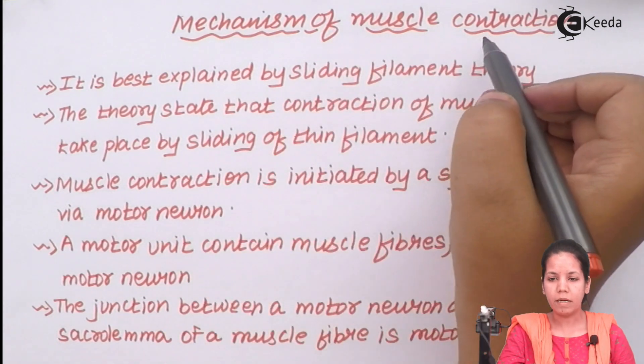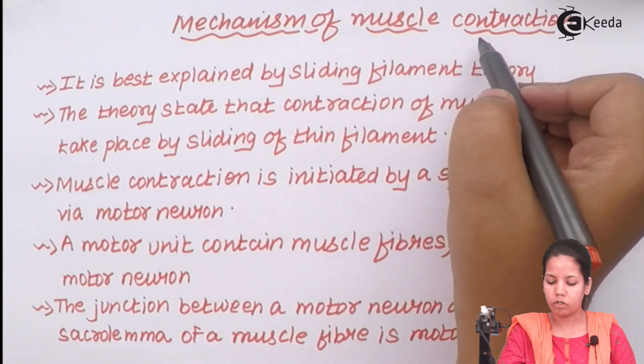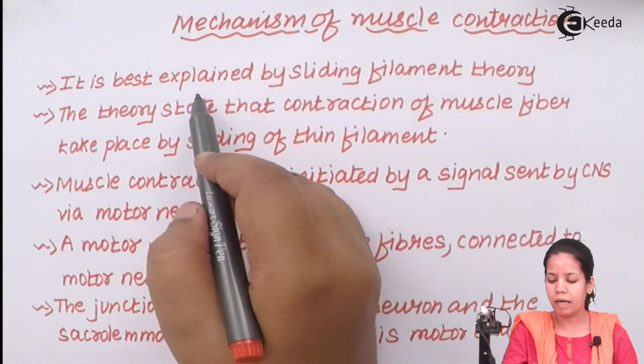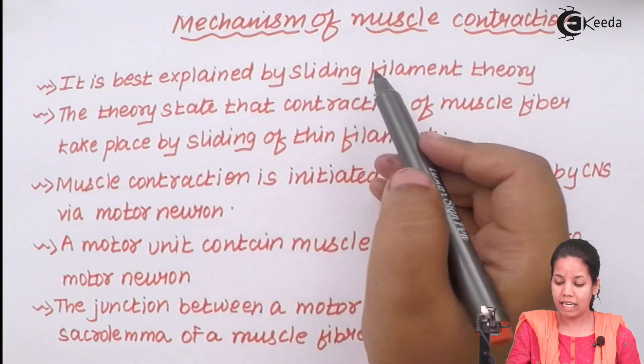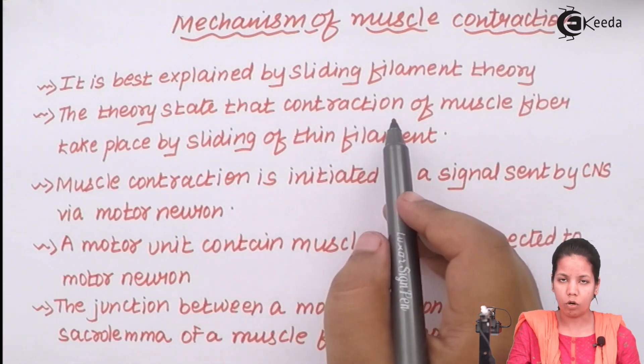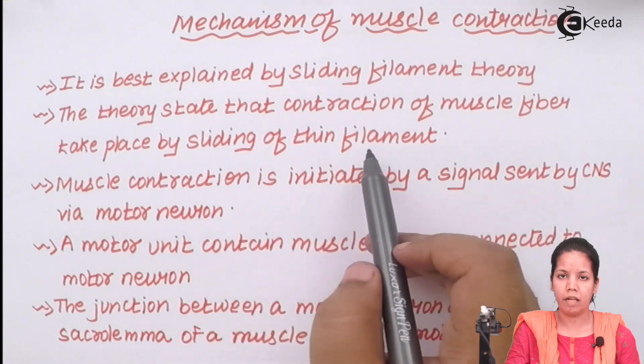Mechanism of muscle contraction. Now if I talk about the mechanism of muscle contraction, it is best explained by your sliding filament theory. Sliding filament theory states that whenever a muscle fiber is contracting, it takes place by sliding of thin filament.